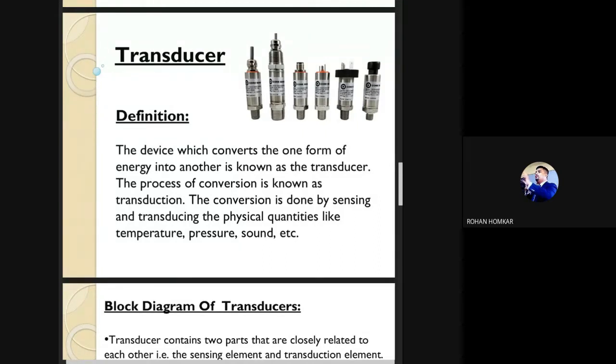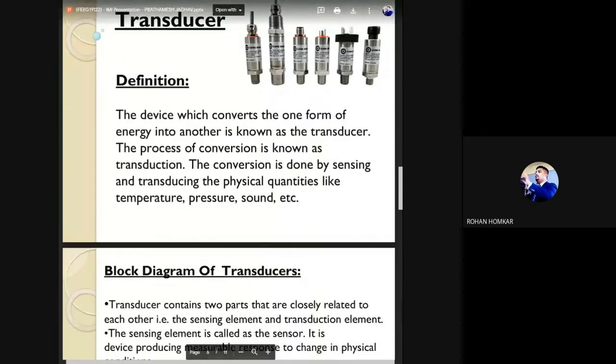Definition: A transducer is a device which converts one form of energy into another form of energy. The process of conversion is known as transduction, and the conversion is done by sensing and transducing physical quantities like temperature, pressure, sound, etc.